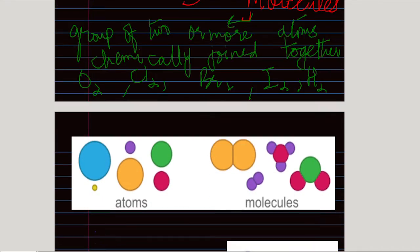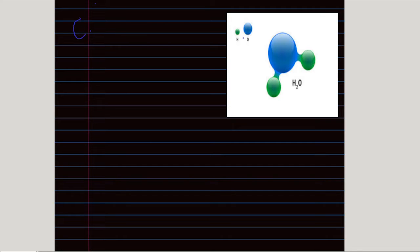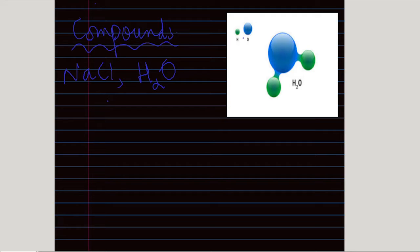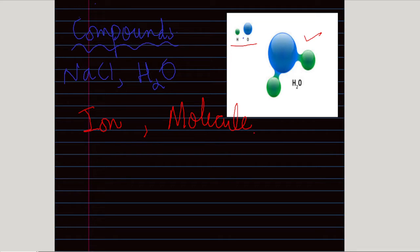Now we are going to talk about compounds. Compounds are formed by the chemical combination of two or more elements — they are substances containing two or more elements chemically combined together, like sodium chloride or water. Compounds can be made up of ions or molecules.